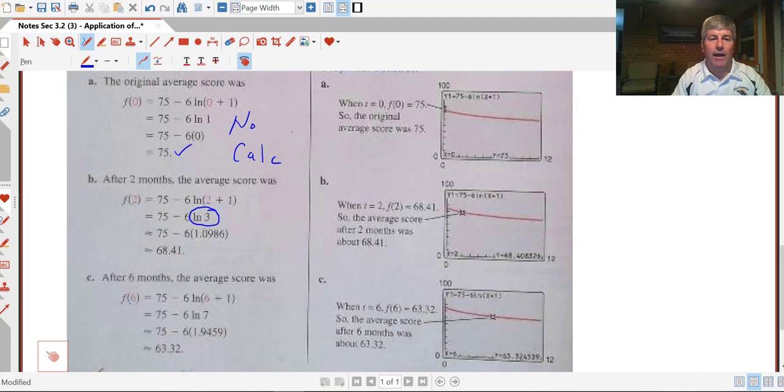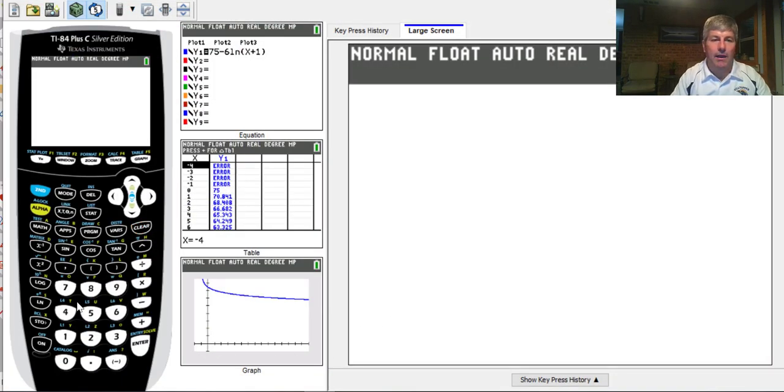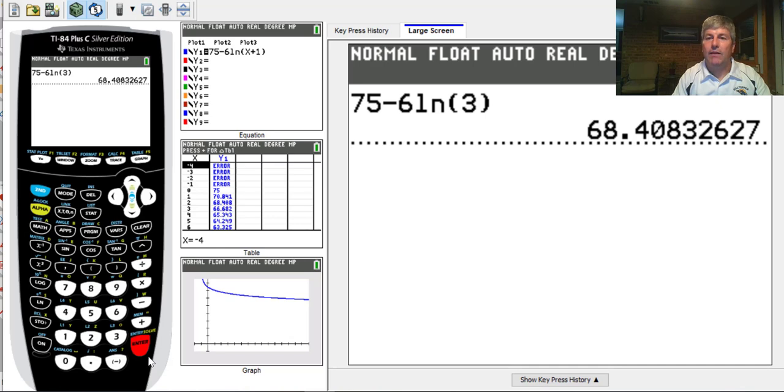And for f of 6, 6 plus 1 is 7. We don't know what the natural log of 7 is, so we're going to use our calculator and input our data. 75 minus 6 times the natural log of 3. We put in 3 because 2 plus 1 was 3, and we get 68.40.